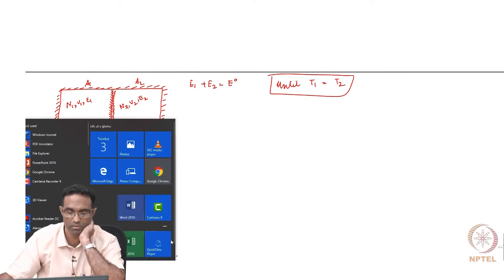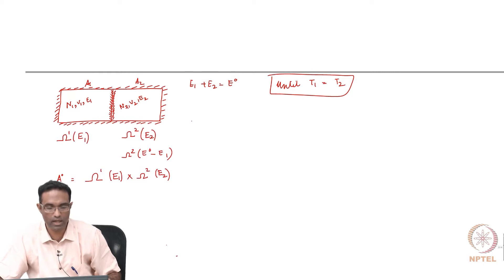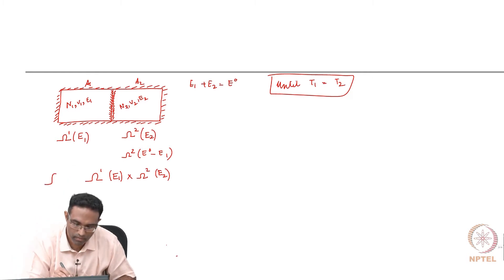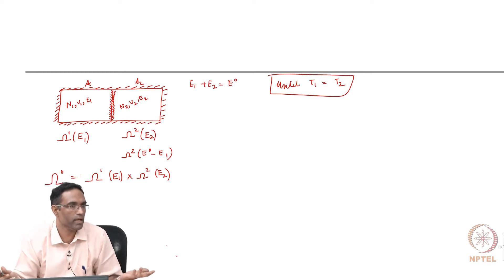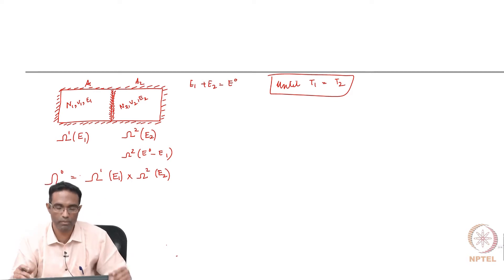The composite system such that A1 is at energy E1 and A2 is at energy E2 can be in omega 1 E1 times omega 2 E2 different ways at any instant of time. So many different possibilities are existing for them to actually have this energy, the composite system both of them together.